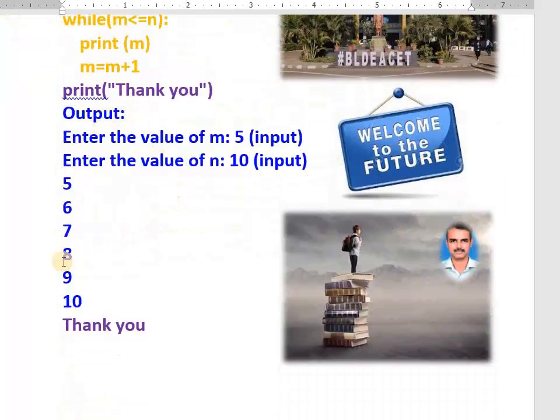You have to develop one software. Whenever we run that software we get the message Enter the value of M. Machine is waiting for one input. I give the input as 5. Enter the value of N. I give the input as 10. Now this software will print the numbers from 5 to 10: 5, 6, 7, 8, 9, 10. Thank you.